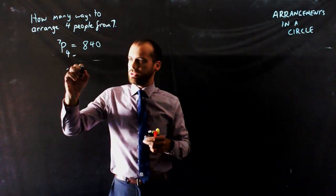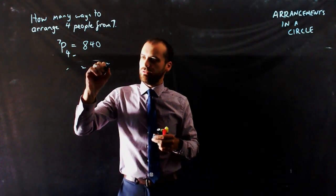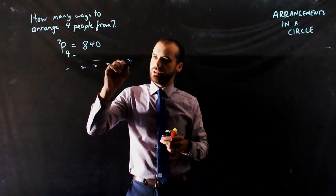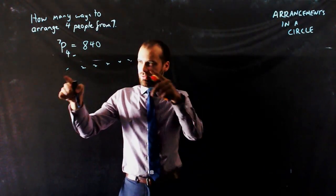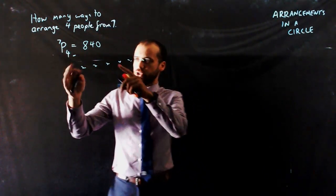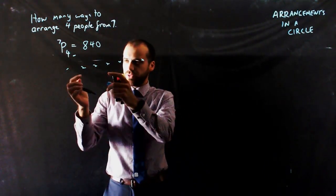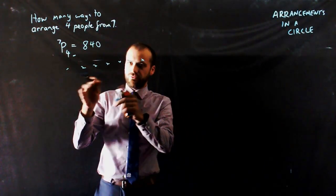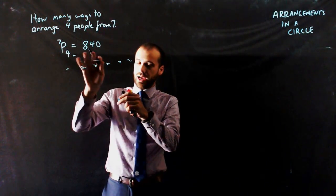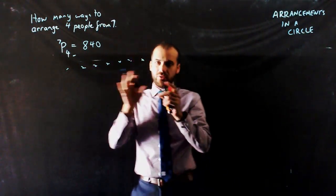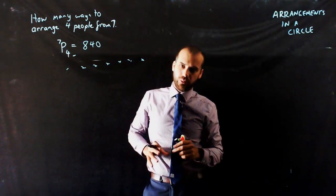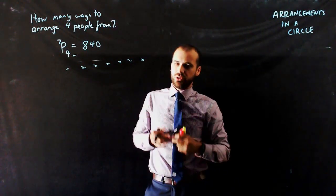So there are 840 different ways. If there are seven people and you're choosing four of them, there are 840 ways for choosing four people in various orders.